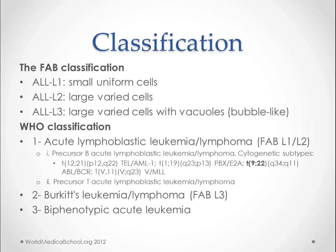The L1 classification has small uniform cells, L2 has large varied cells, and L3 has large varied cells with vacuoles — the bubble-like appearance. The World Health Organization recently discussed a completely different classification because they say the FAB classification doesn't really tell us anything in terms of prognostic factors or change treatment at all.